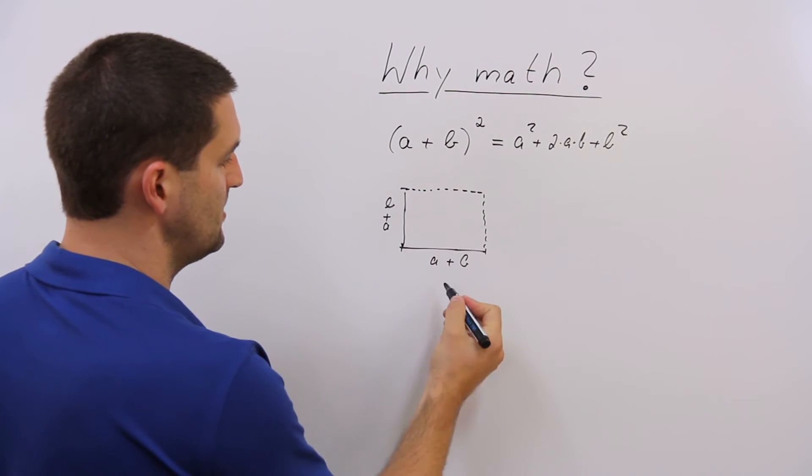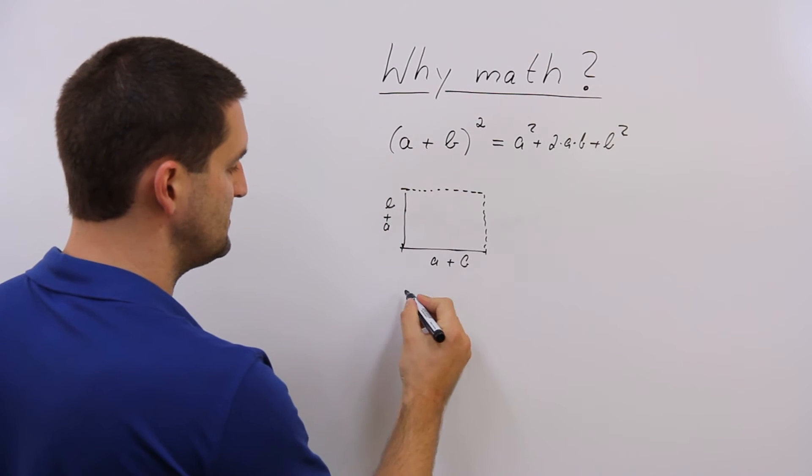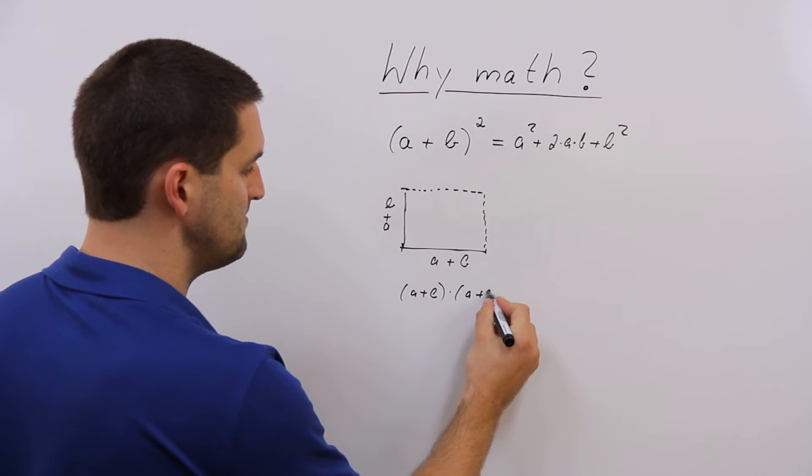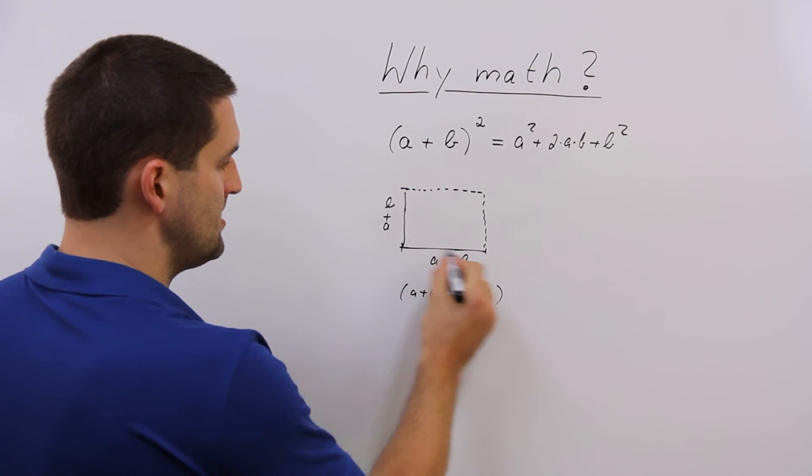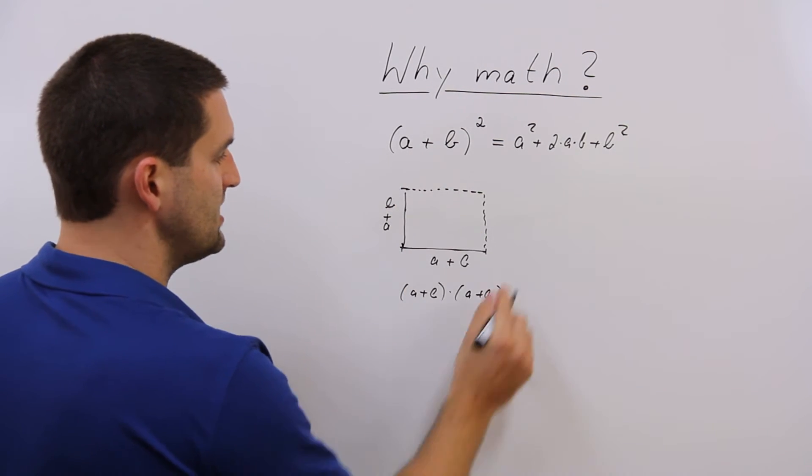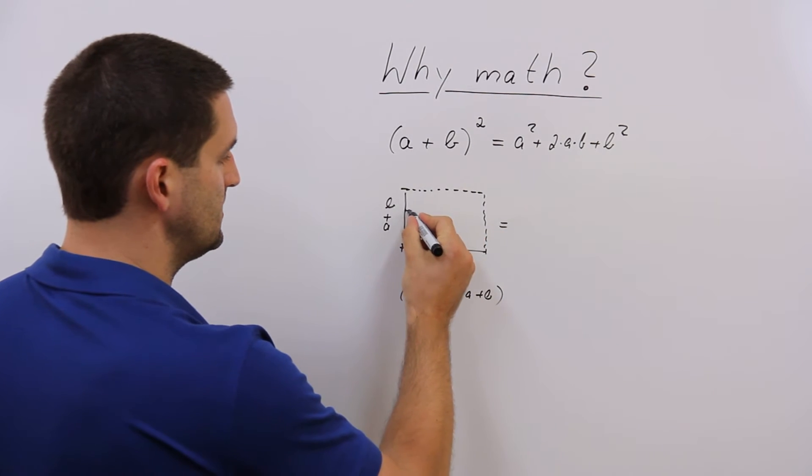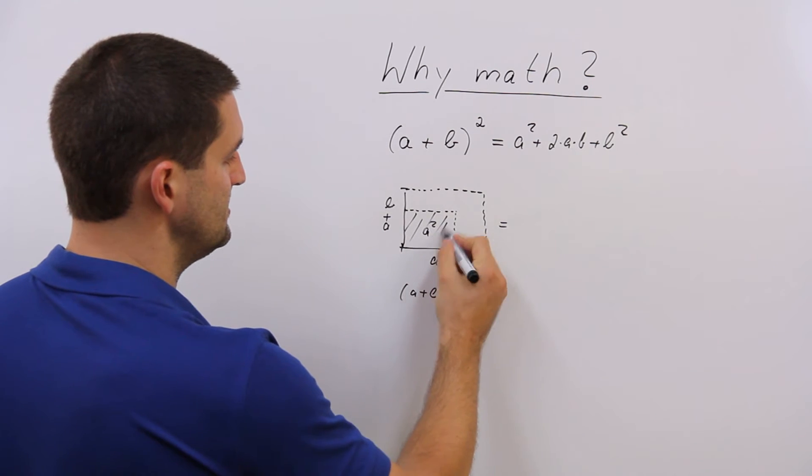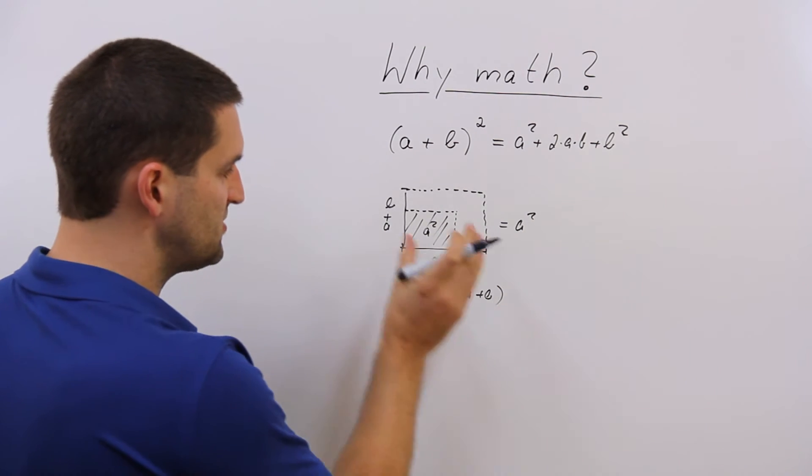see an area. Why (a + b)² is equal to (a + b) × (a + b)? This area. And this area is equal to a², this area. You see it.